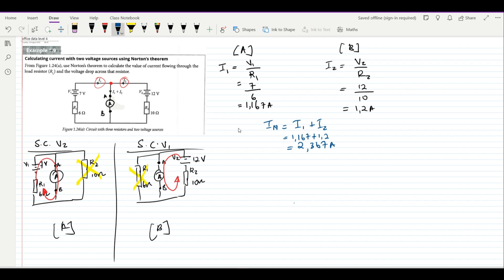Now we move to step four in your book. The next step is to calculate the Norton resistance.